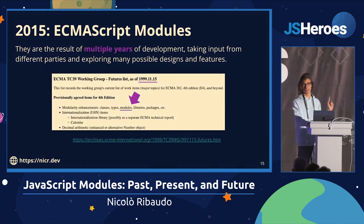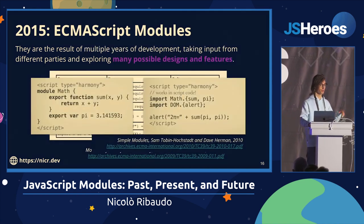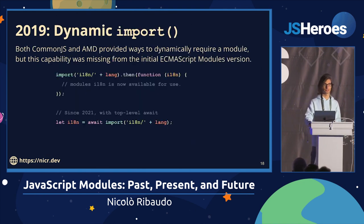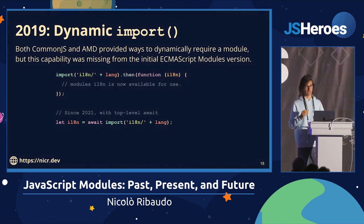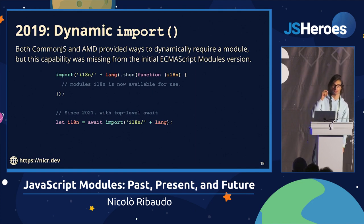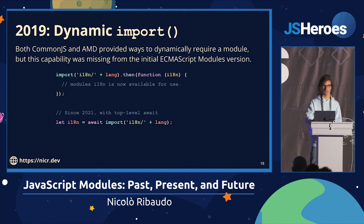It took a long time to come up with the ECMAScript module spec. People in 1999 were already thinking about standardizing a module loading system within JavaScript, and they went through many different possible design alternatives. And in 2019, we finally had dynamic import in ESM — an asynchronous function that returns a promise. CommonJS had synchronous dynamic loading, AMD had asynchronous. ESM was missing this capability. And since a couple of years later, we can also use the await syntax to avoid having to think about how promises work.